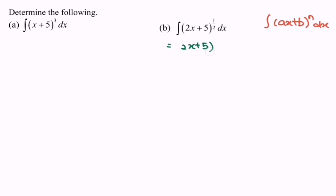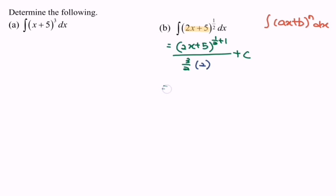For part b, we have (2x + 5) to the power of 1/2 + 1, over 3/2. Do remember to differentiate the internal function, and we obtain 2, so multiply by 2, plus c. Rewrite the situation: (2x + 5) to the power of 3/2, simplified.